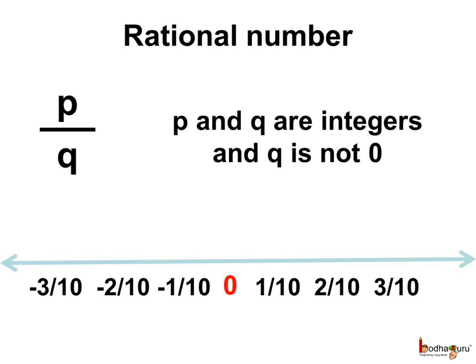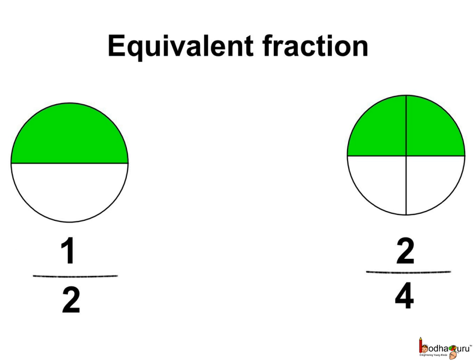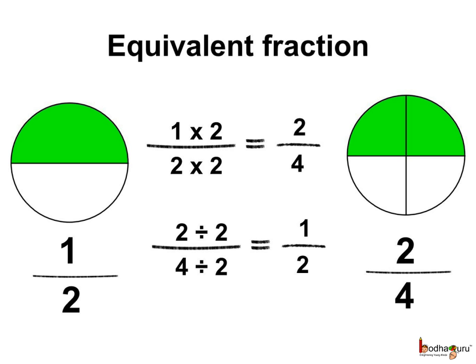The rational number includes the integers and the fractions too. We have already learnt about equivalent fractions — like 1 by 2 and 2 by 4 are equivalent fractions as their values are the same. If we multiply both the numerator and the denominator of 1 by 2 by 2, we get 2 by 4. And if we divide both the numerator and the denominator of 2 by 4 by 2, we get 1 by 2. So, if we divide or multiply both the numerator and the denominator by the same number, the value of the fraction remains the same and we get an equivalent fraction.